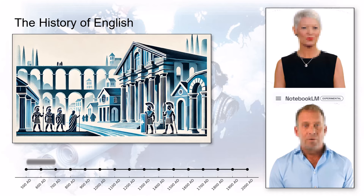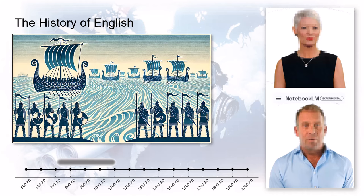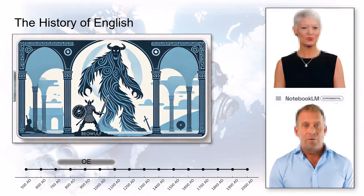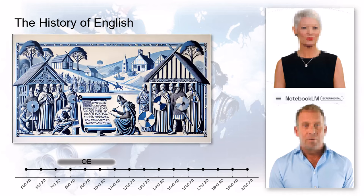And then boom — the Anglo-Saxons show up in the fifth century. Big change. These were Germanic tribes: the Angles, Saxons, and Jutes, and their languages mashed together into what we call Old English. Not quite texting lingo — think Beowulf, that epic poem. That's Old English. Different grammar, words changing depending on their role in the sentence — like a whole different operating system for language.